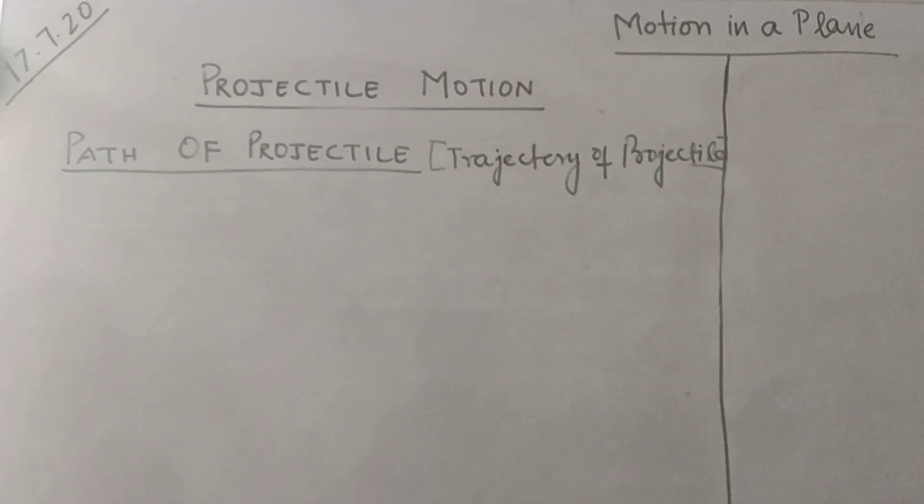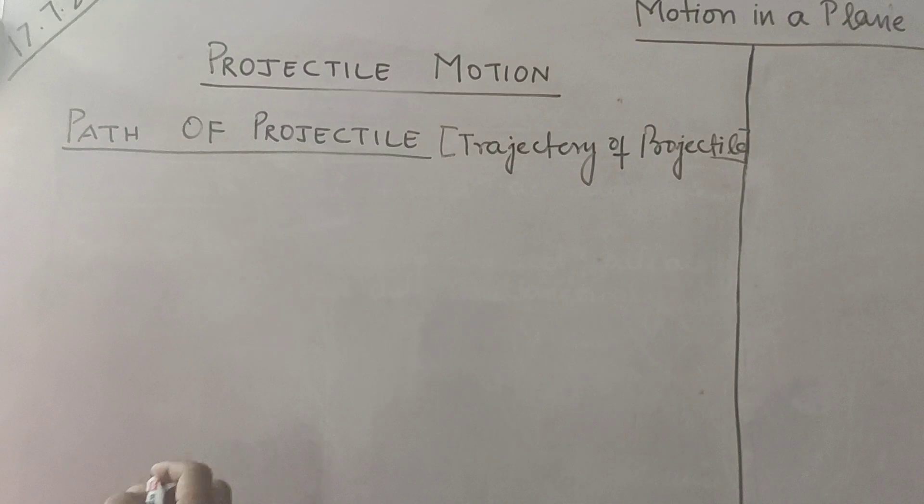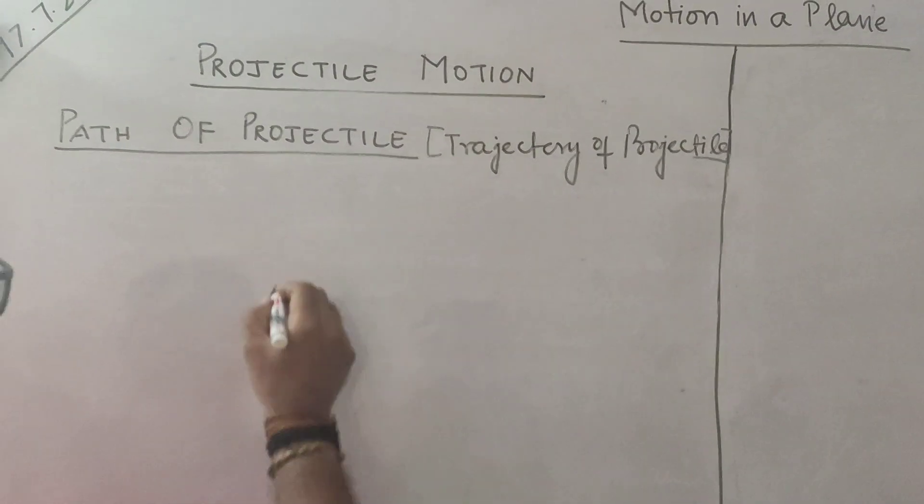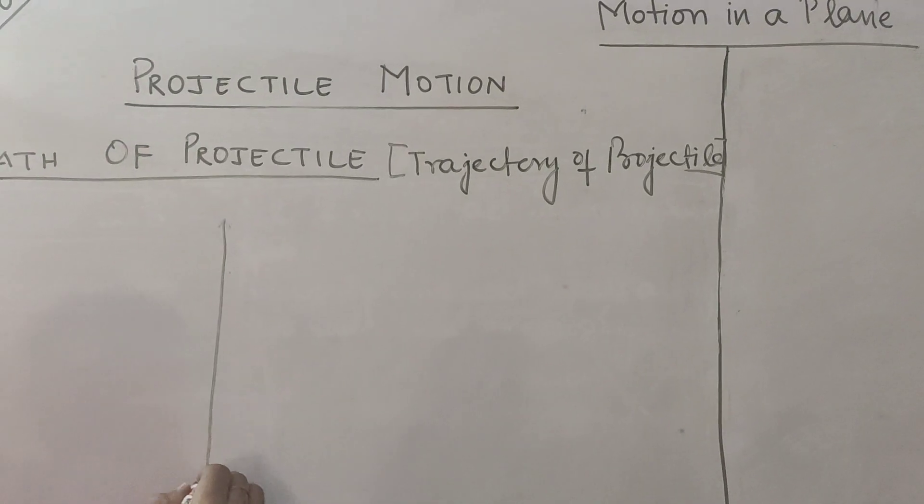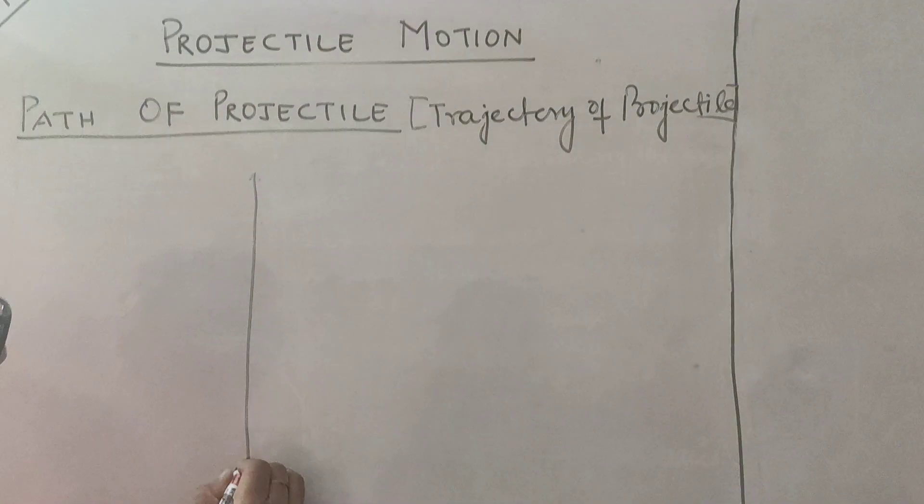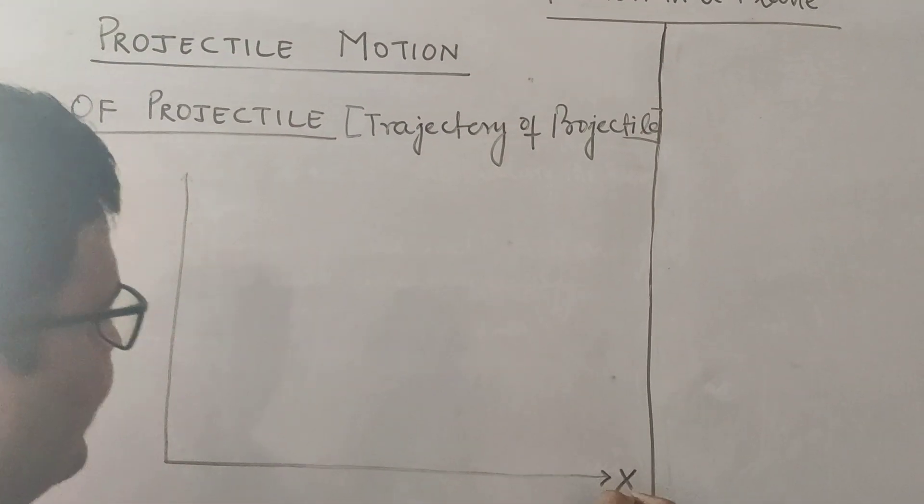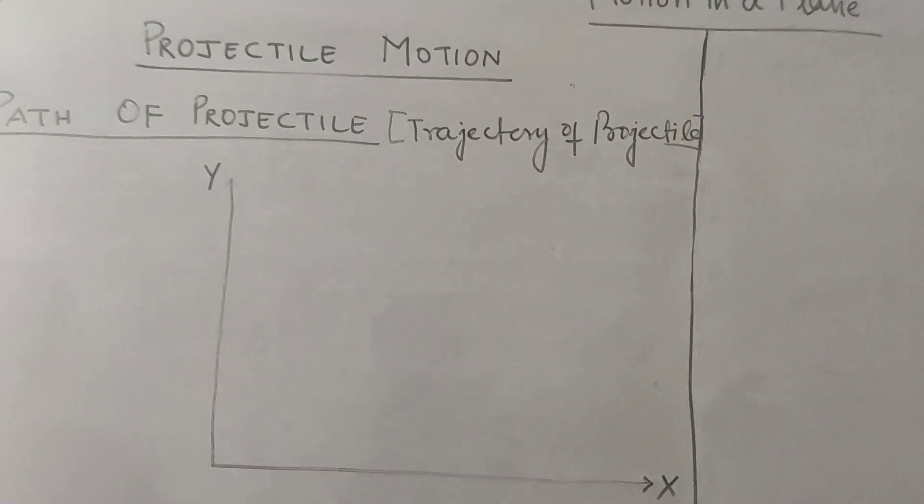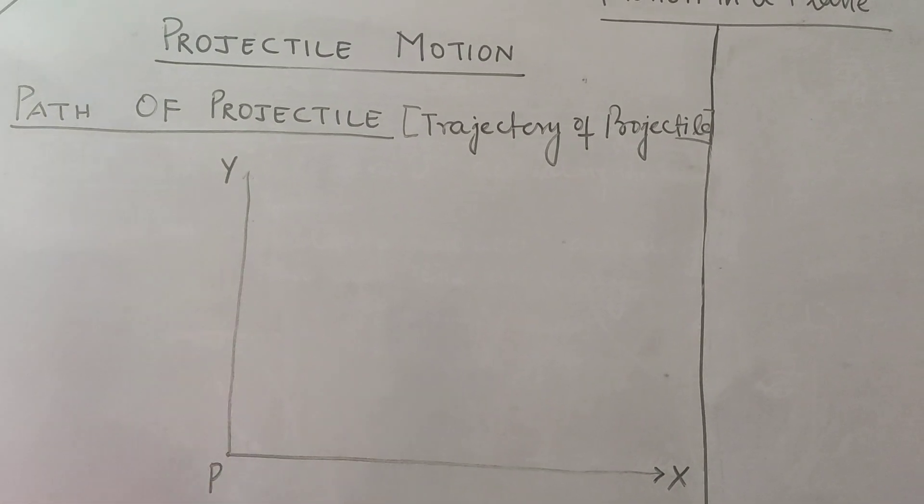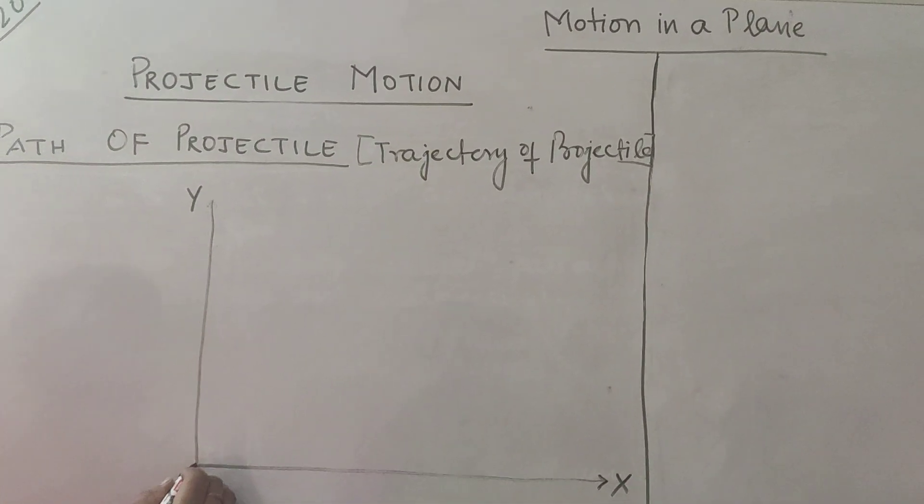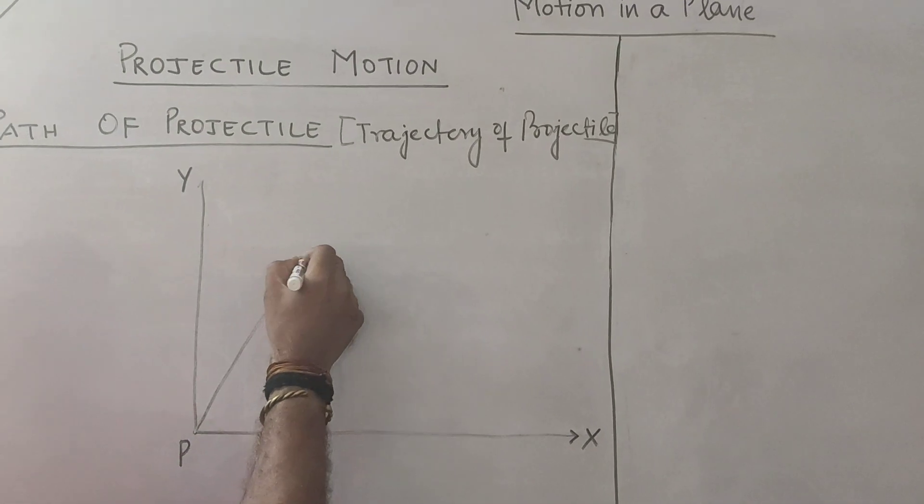Now this is path of projectile. So I have told you that projectile is two dimensional motion. So let us consider y axis. This is along x axis. This is along y axis. Now this point is point of projection.